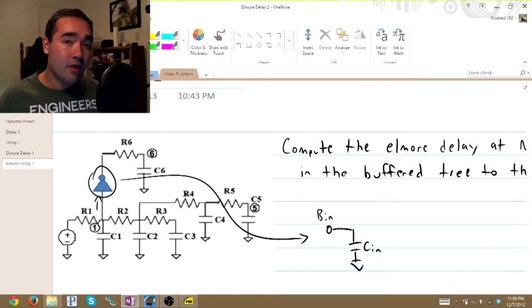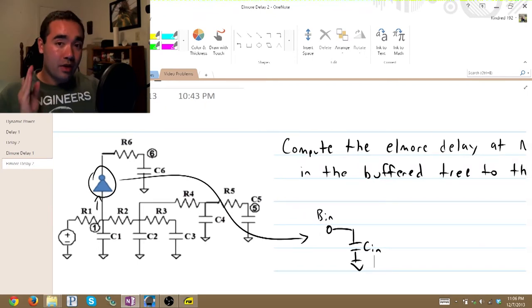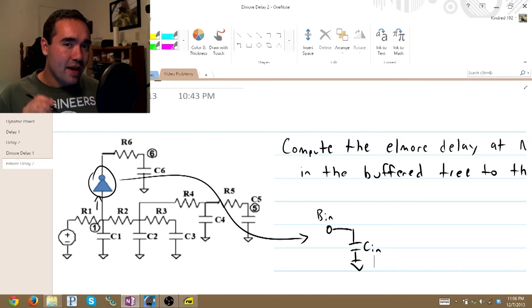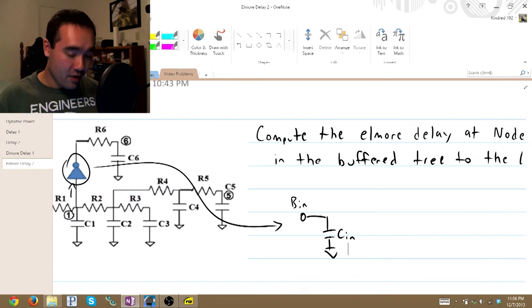Now, the deal with a buffer is that your input goes onto the gate of some transistor. But there isn't an electrical connection between the gate and the source and drain of that transistor. Therefore, we draw this as a break in the circuit.